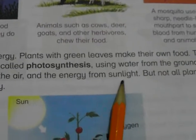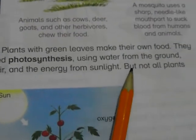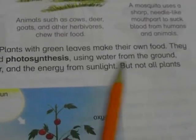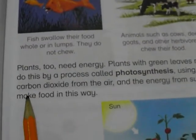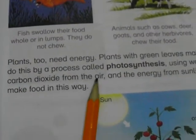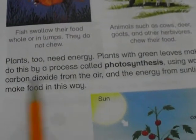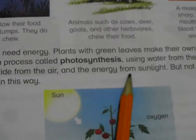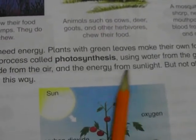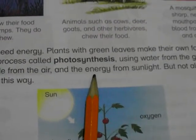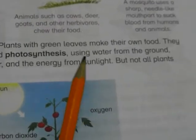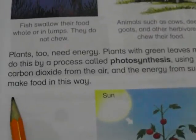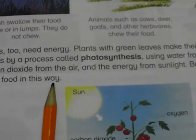They use water from the ground, carbon dioxide from the air, and energy from sunlight. They do this by a process called photosynthesis. But not all plants make food in this way.